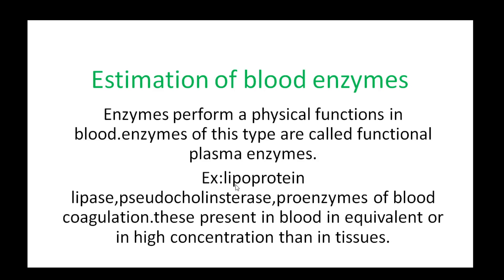Some examples of Functional Plasma Enzymes are Lipoprotein Lipase, Pseudo-Cholinesterase, and pro-enzymes of Blood Coagulation. The most important characteristic is that they perform a physiological function in the blood.